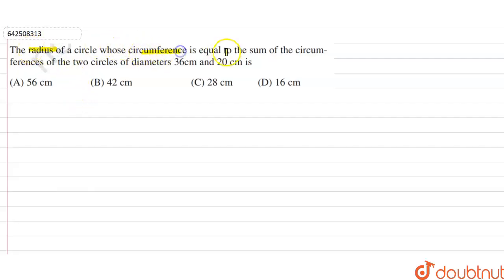Hi students, our question is: the radius of a circle whose circumference is equal to the sum of the circumferences of two circles of diameters 36 centimeters and 20 centimeters is?